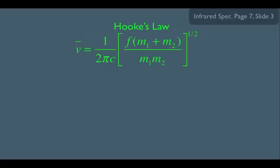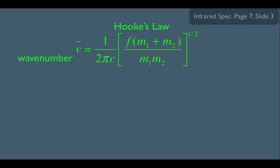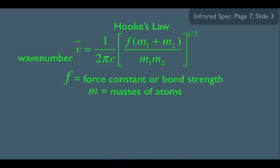In our particular case, we want our equation to equal wavenumber. If you learned this equation in physics, you probably saw it equal to frequency — but remember, frequency and wavenumber are proportional. We're just going to accept this equation as true. In the equation you have an f, which is equal to the force constant, or in other words, the bond strength. You also have m1 and m2, which are the masses of the atoms. Every bond technically connects two atoms, so that's why there's an m1 and an m2.